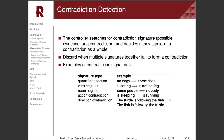To determine if two sentences are contradictory, the controller searches for possible evidence of a contradiction and decides if they can form a contradiction under the context. Here, we categorize some contradiction signals from the SICK dataset.